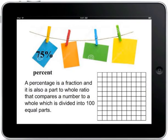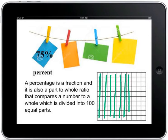Percent is a fraction, and it is also a part to whole ratio that compares a number to a whole, which is divided into one hundred equal parts. Here in the hundredth grid, I will shade in now 75%, which would be 10, another 10, another 10 is 30, 40, 50, 60, 70, and 5%.